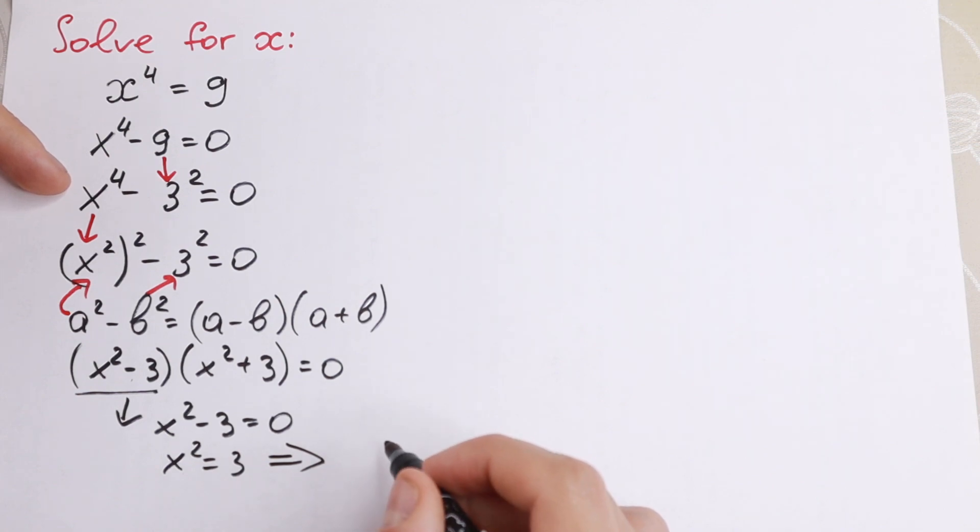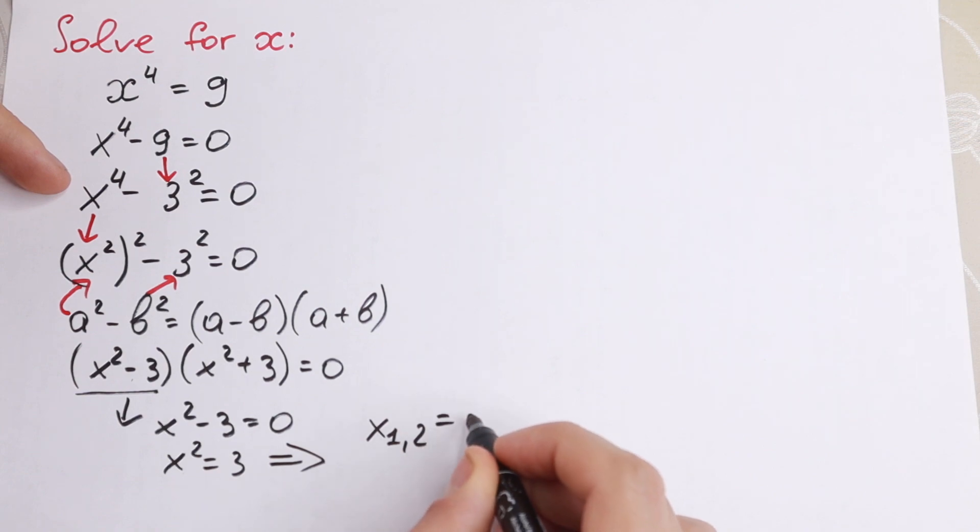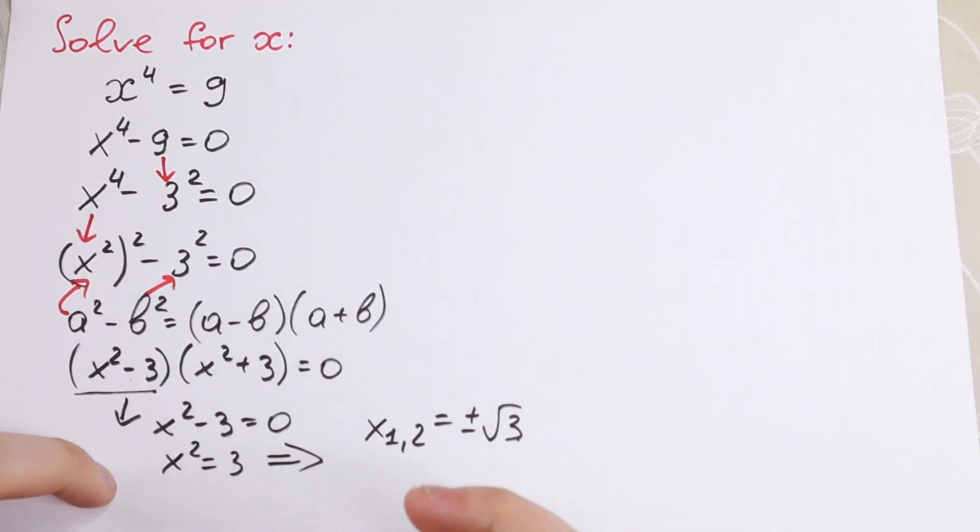We will have that our x1 and 2 equal to plus minus square root of 3. So this is our first two roots.